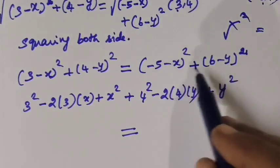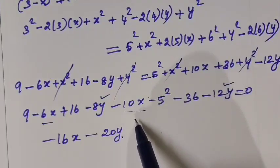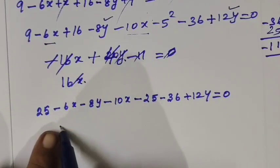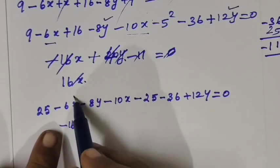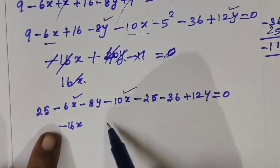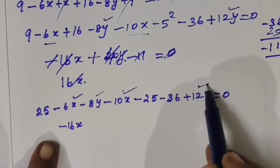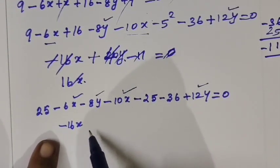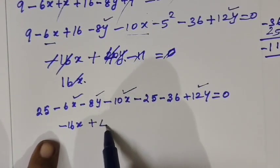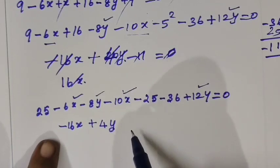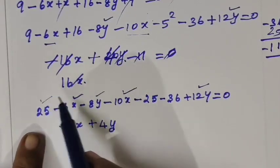Now minus minus cancel. x1, y1 minus 16, x2 so minus 2x plus y minus 8y plus 12y. 12 minus 8. So plus 4y. Next one is 25. Then minus 25. This is 4.